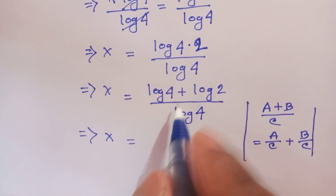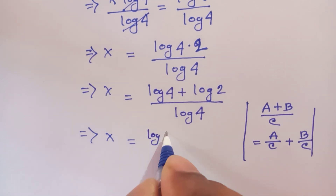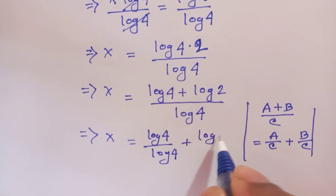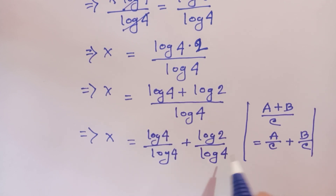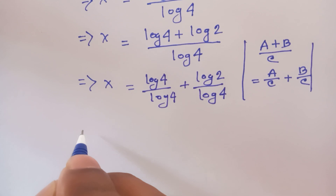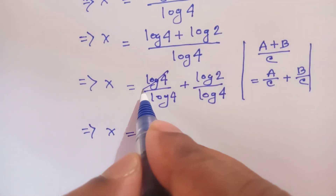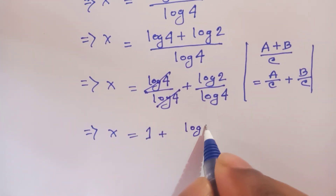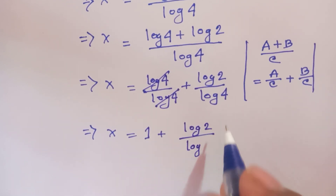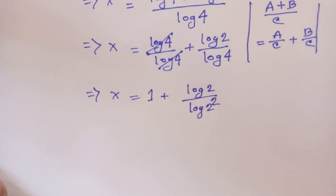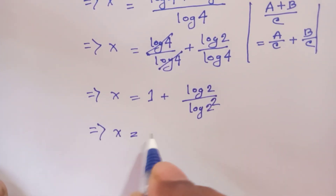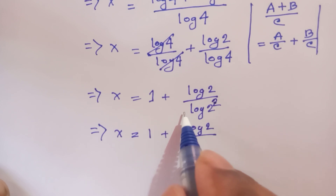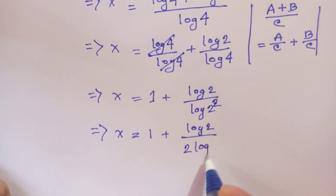According to this formula, we write the numerator as log of 4 divided by log of 4, plus log of 2 divided by log of 4. The log of 4 divided by log of 4 cancels to 1, so x equals 1 plus log of 2 over log of 4. Since log of 4 can be written as 2 log of 2, we get x is equal to 1 plus log of 2 over 2 log of 2.